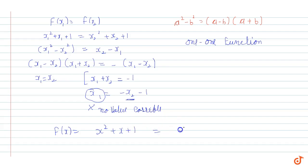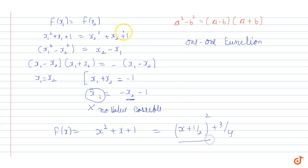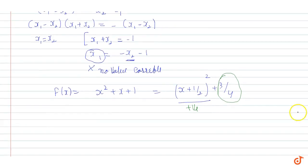To analyze the range, we complete the square: f(x) = (x + 1/2)² + 3/4. Since (x + 1/2)² is always positive and 3/4 is always positive, f(x) is always greater than or equal to 3/4.